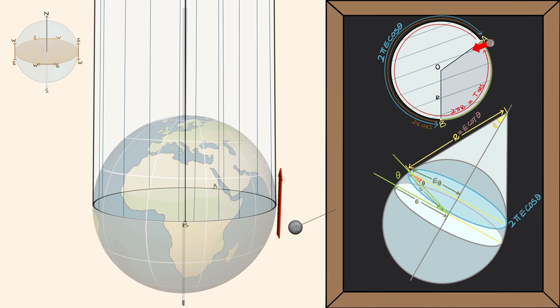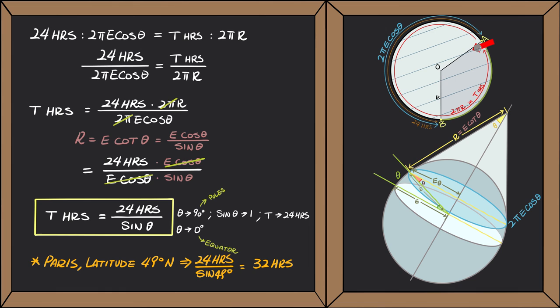In fact, if you look at the equation above, as theta gets closer to zero degrees, the value of sine also gets closer to zero, and the time needed for one rotation becomes infinitely long. In other words, it doesn't turn at all.